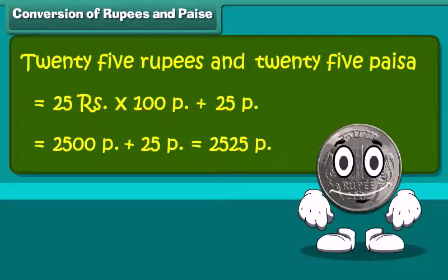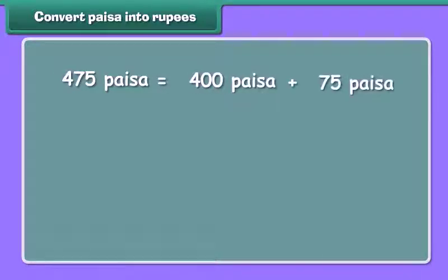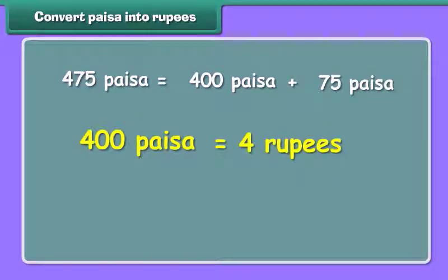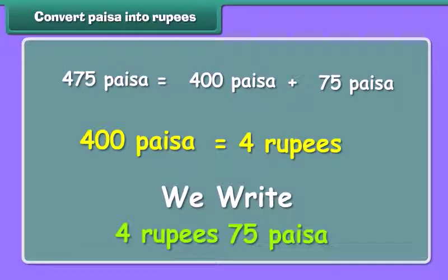Amazing! So much money! It's time to convert paisa into rupees. 475 paisa is equal to 400 paisa plus 75 paisa. As we know, 400 paisa is equal to 4 rupees. Therefore, we can write it as 4 rupees and 75 paisa.